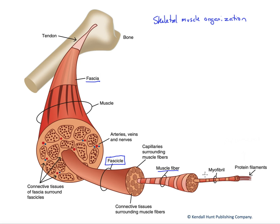They're called fibers because of their elongate structure. These are cells formed by cell fusion — they have many nuclei and potentially thousands of mitochondria. These are huge cells, often as long as the muscle that contains them.